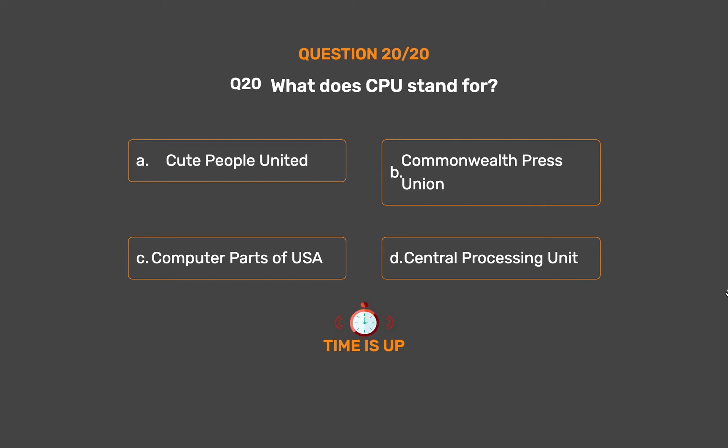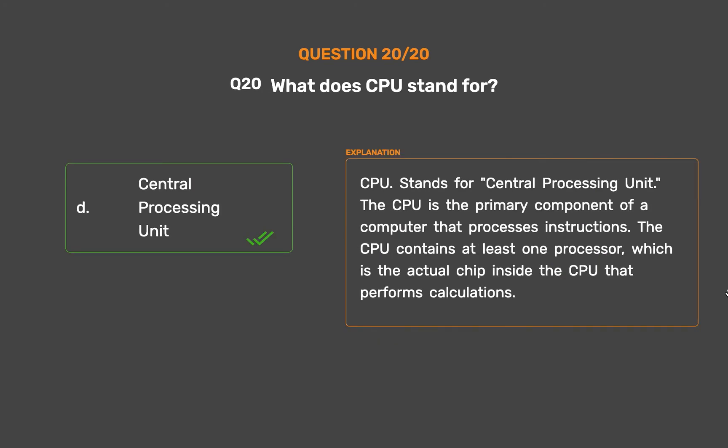The correct answer is Option D: Central Processing Unit. CPU stands for Central Processing Unit. The CPU is the primary component of a computer that processes instructions. The CPU contains at least one processor, which is the actual chip inside the CPU that performs calculations.